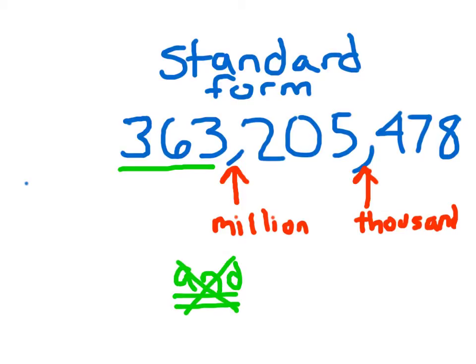So we'll say 363 million. Now for this next one, be careful. What are you going to say? 205. 205. And for this next one and this next period, for the ones period you would say 478. So let's read that all together again: 363 million, 205 thousand, 478.